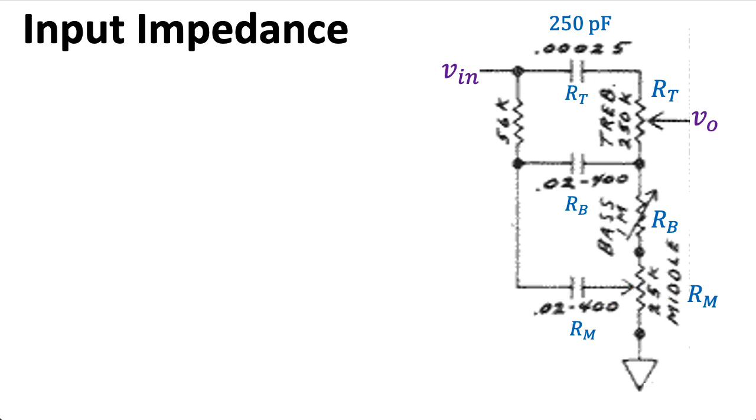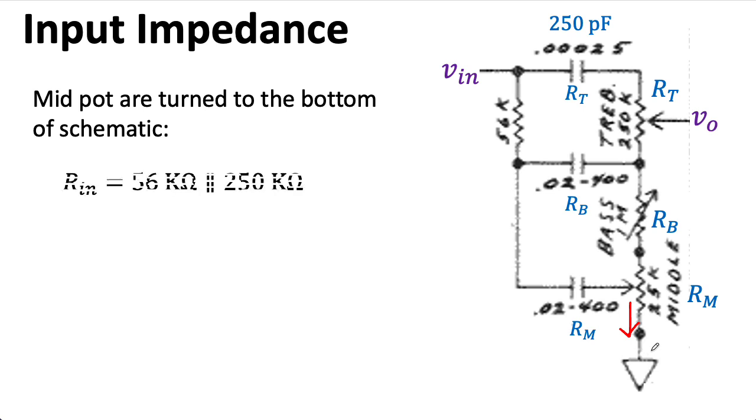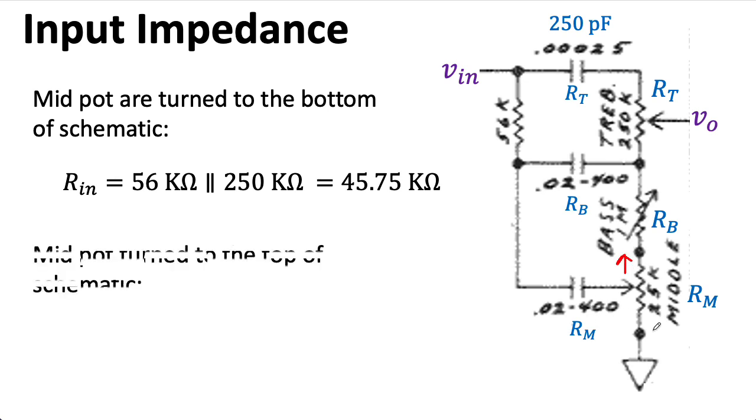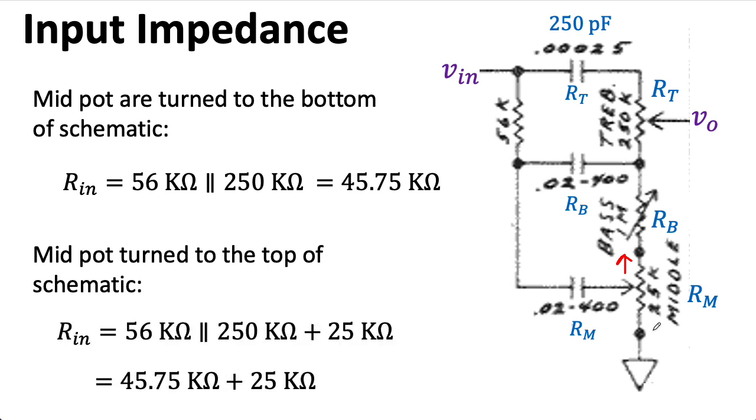And that's in series with whatever the remaining resistance of the mid-pot is. So, let's look at the extreme cases. If that mid-pot is turned all the way down on the schematic, and by down I mean this direction towards ground, then I just have these two resistances in parallel, which is around 46 kiloohms. If, on the other hand, I have it turned all the way up relative to how the schematic is drawn, off the top of my head I'm not sure if that's clockwise or counterclockwise, then we have that full 25k in there. And, if I add that to the calculation, I wind up with around 71 kiloohm.